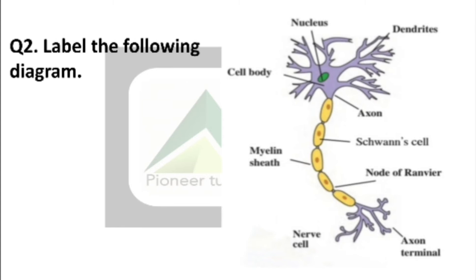Now this is about a diagram of a nerve cell. And this is about parts. So draw it very properly. Next.